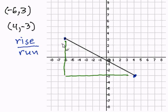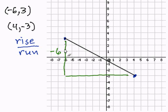Let's see how far we traveled: one, two, three, four, five, six. So we traveled negative six down. The reason why it's negative six is because we're traveling down. Now if we're traveling to the right it's going to be positive.